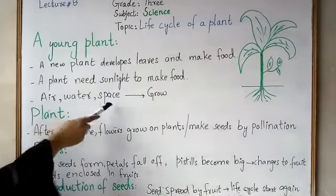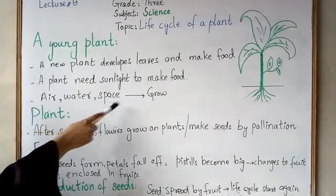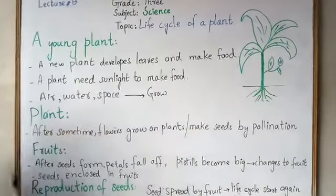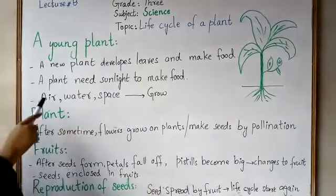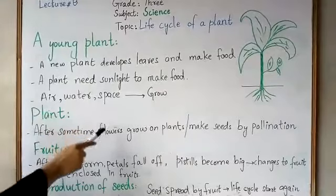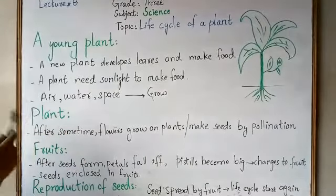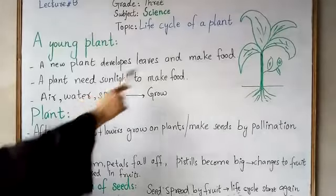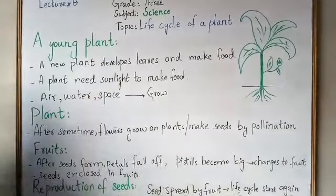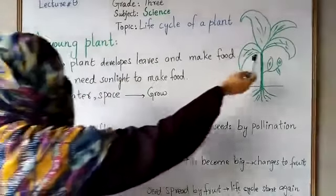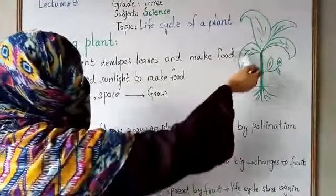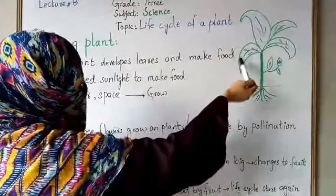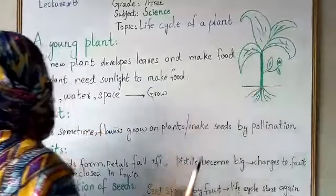The plant needs air, water, and space to grow. These are the necessary factors which the plant needs for growth. The plant will make food through sunlight, and these are the parts of the plant through which the plant makes food.